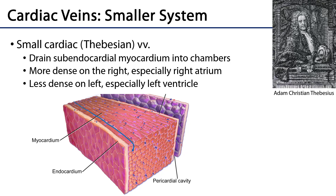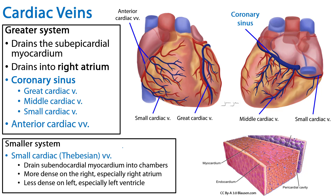More drainage at the right atrium, less at the left ventricle. So we've discussed the greater and the smaller system of cardiac veins: the greater system consists of a coronary sinus draining into the right atrium with great, middle, and small cardiac vein tributaries, and anterior cardiac veins that drain directly into the right atrium. There are also small cardiac veins or Thebesian veins of the smaller system that drain directly into the chambers of which they're adjacent. This is your summary slide. Thank you for your time.